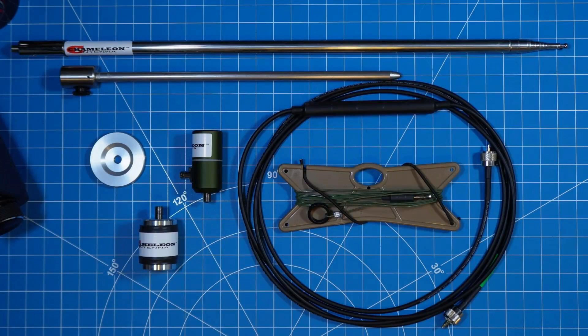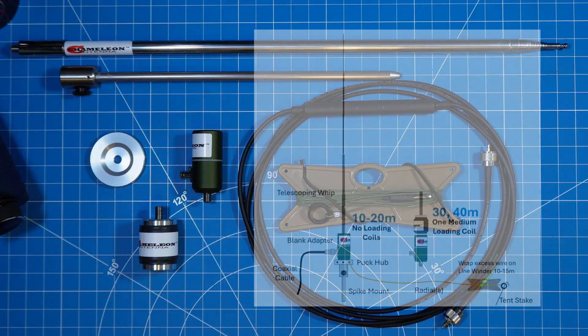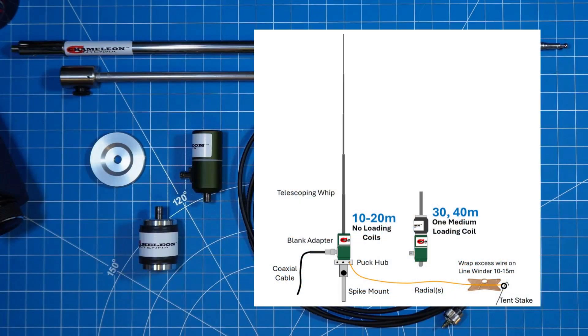First up is the CHA-BV, Basic Vertical Antenna System. Some of the components you're familiar with, some are new. We'll talk about those in a second. This is the most simplistic way in amateur radio to get from 2 to 40 meters just with these components alone.